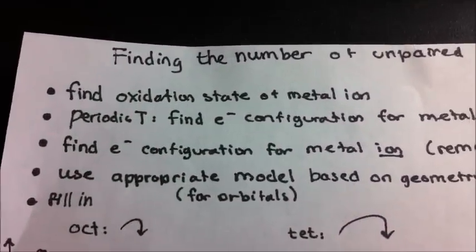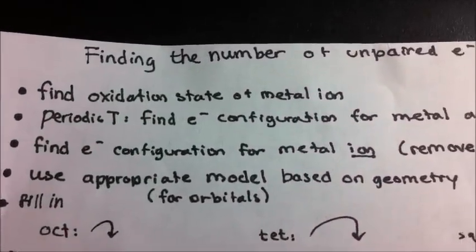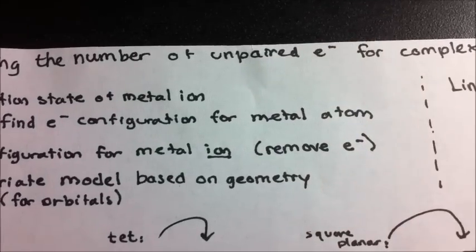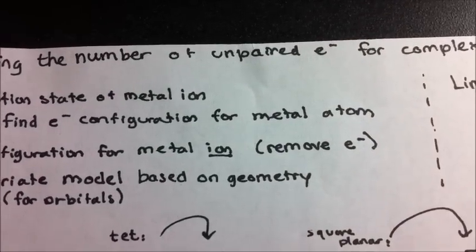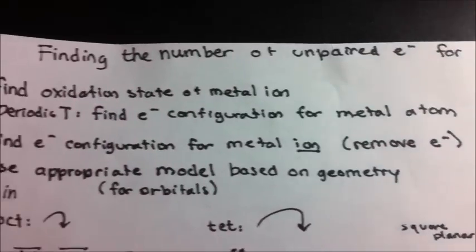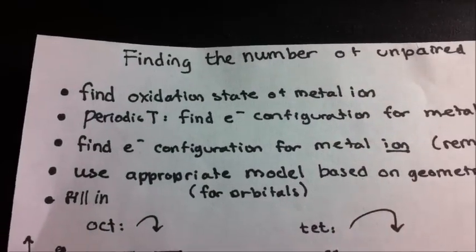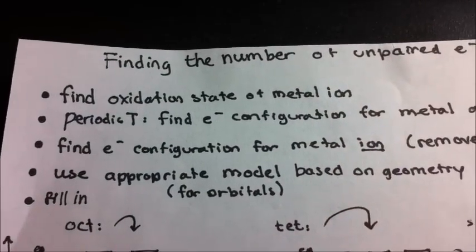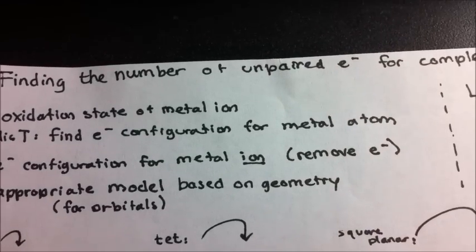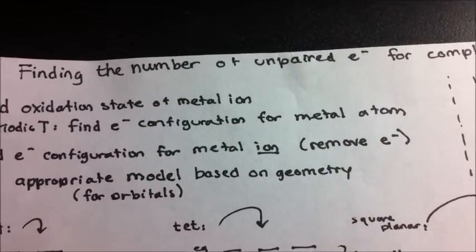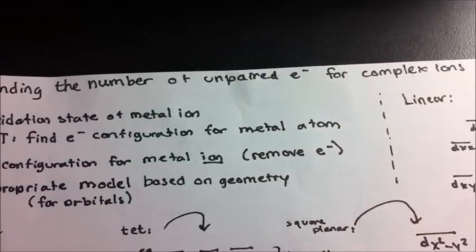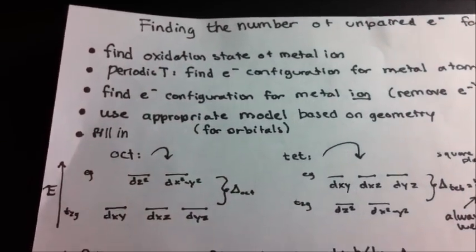Afterwards, we find the electron configuration for the metal ion, and we do that by removing electrons from this configuration. Next, we use the appropriate model for your orbitals based on the geometry of your complex ion in question.